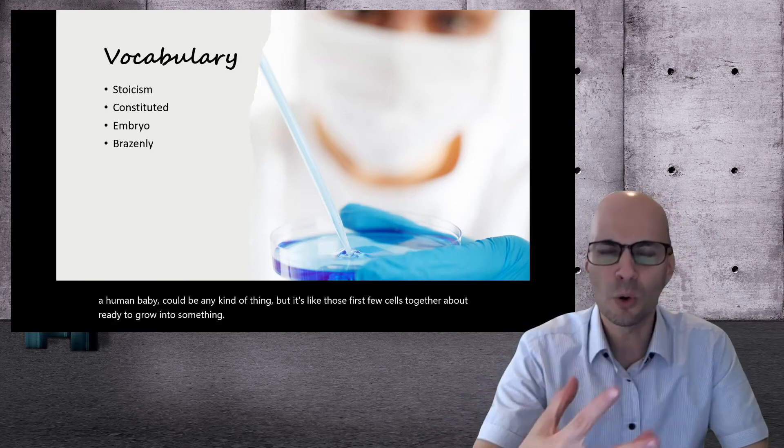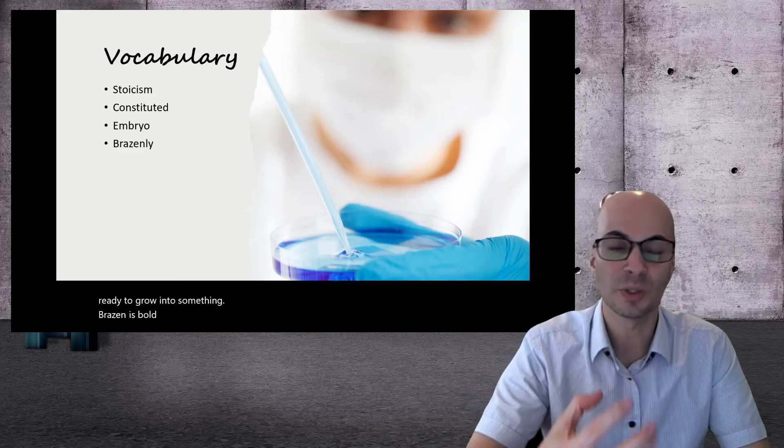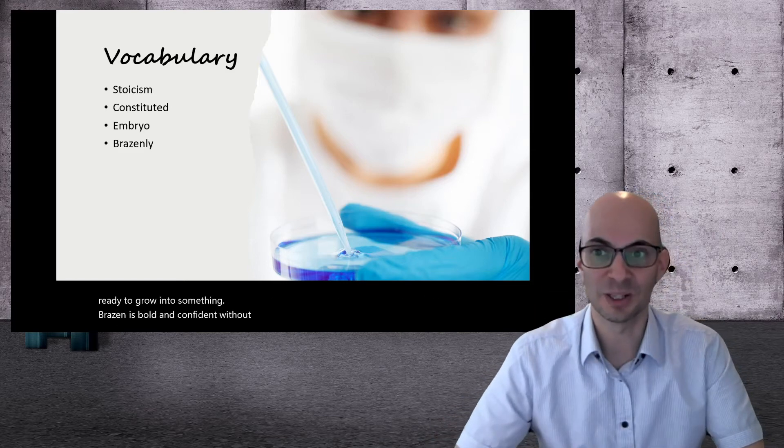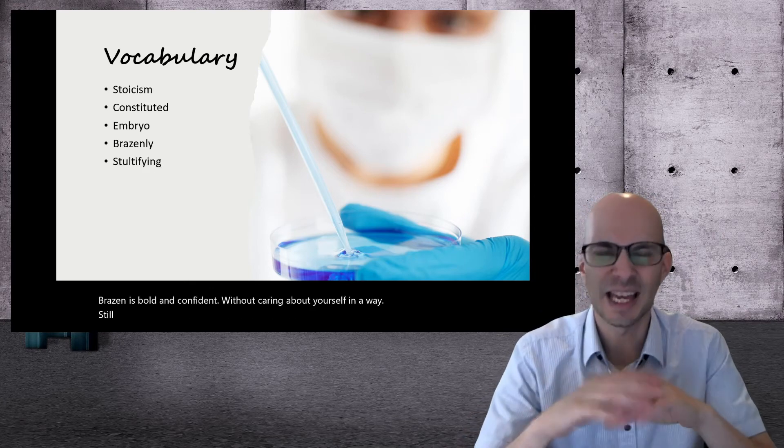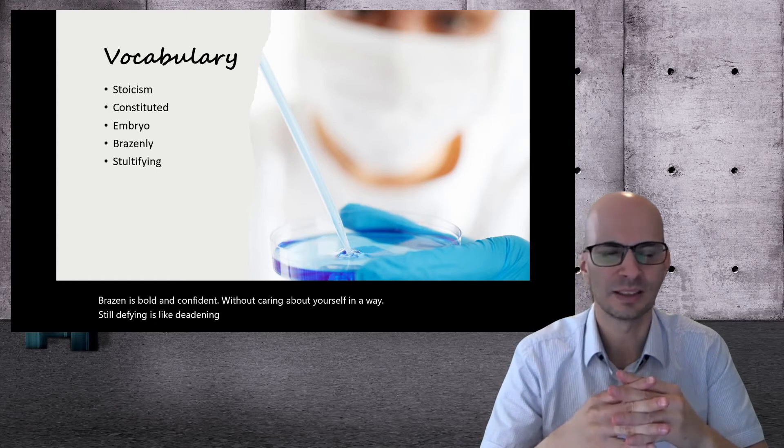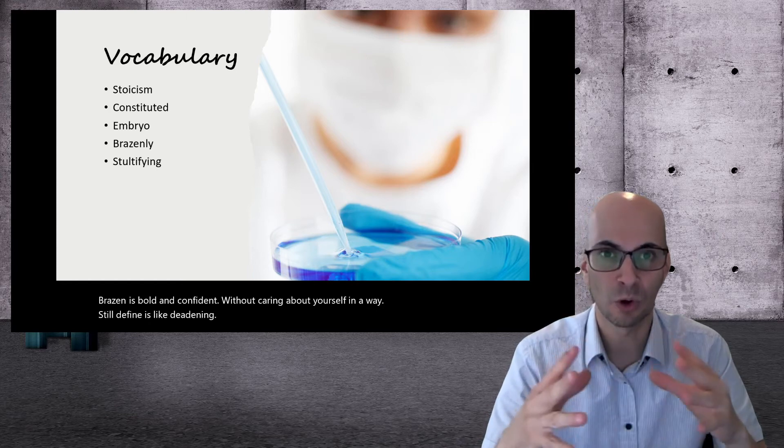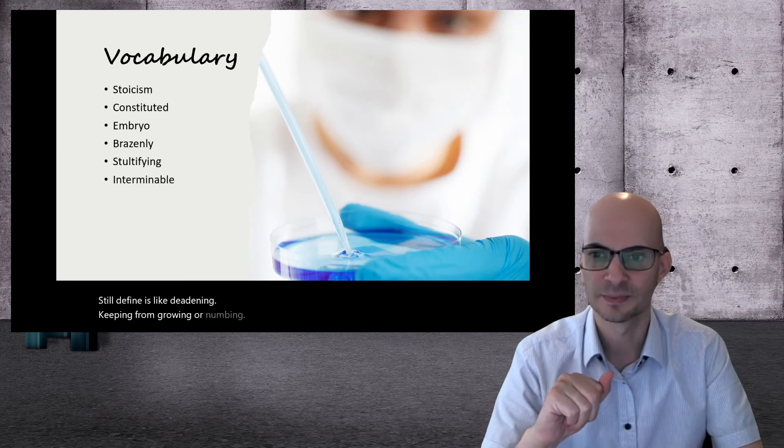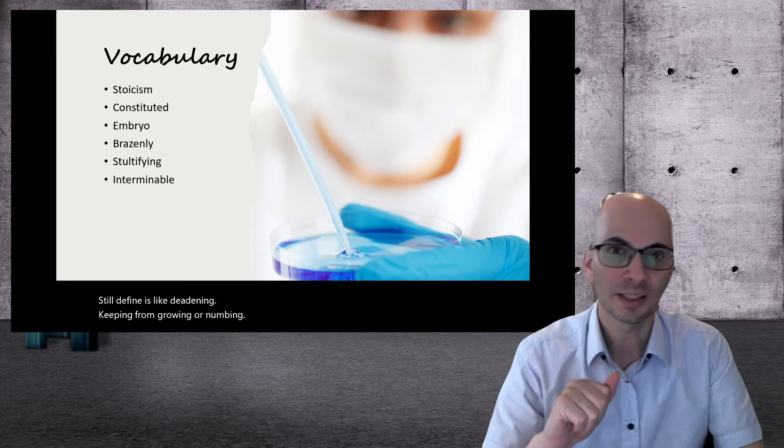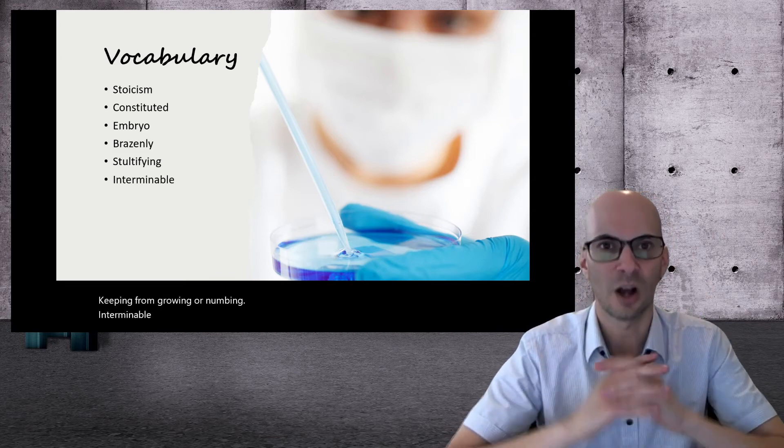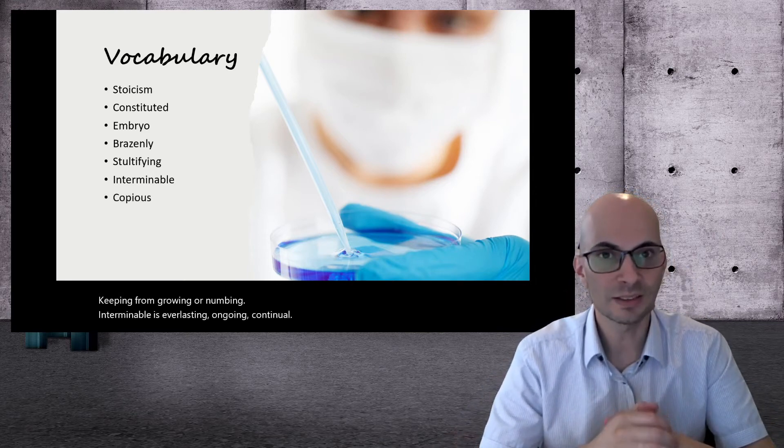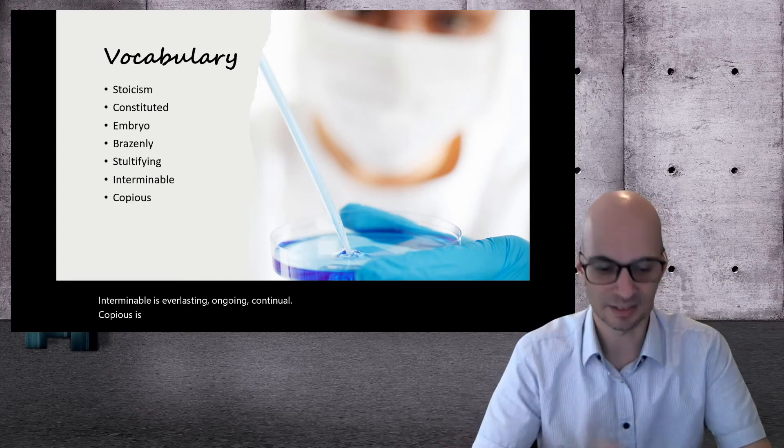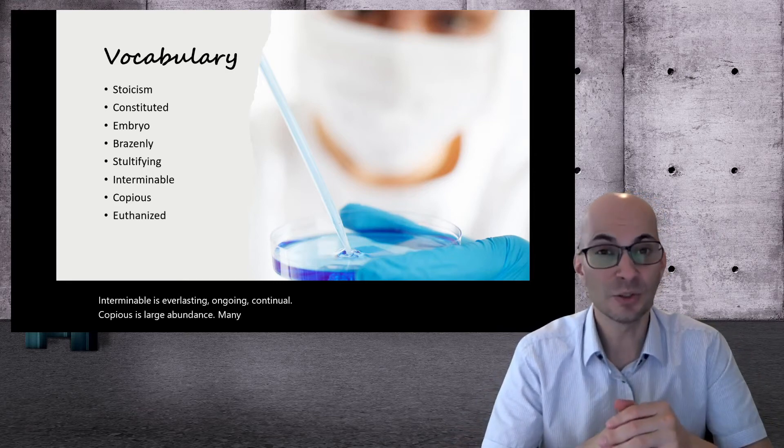Brazen is bold and confident without caring about yourself in a way. Stultifying is like deadening, keeping from growing or numbing. Intermittable is everlasting, ongoing, continual. Copious is large, abundance, many.